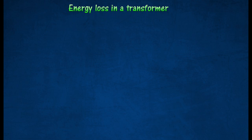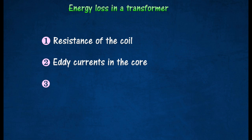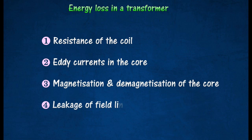In practice, energy is lost from a transformer in the following ways: resistance of the coil, eddy currents in the core, magnetization and demagnetization of the core, and leakage of field lines.